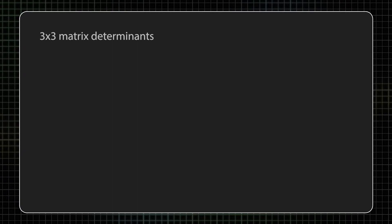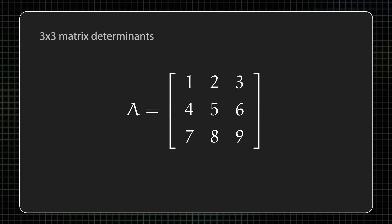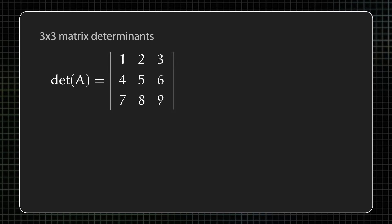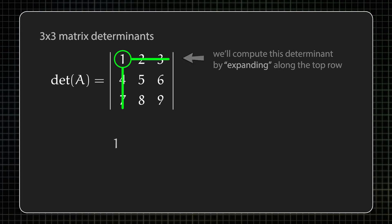So if we have a three-by-three matrix like this one, then one way to compute its determinant is to expand along the top row. What that means is for each number in the top row, we cross out the row and column of the matrix containing that number, and then we multiply the number by the determinant of the two-by-two matrix that remains.